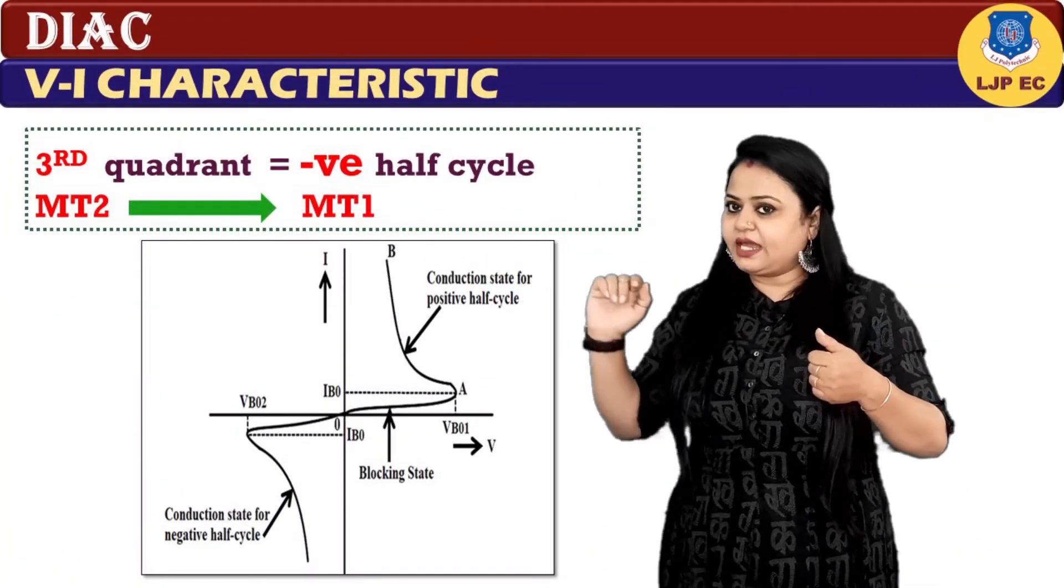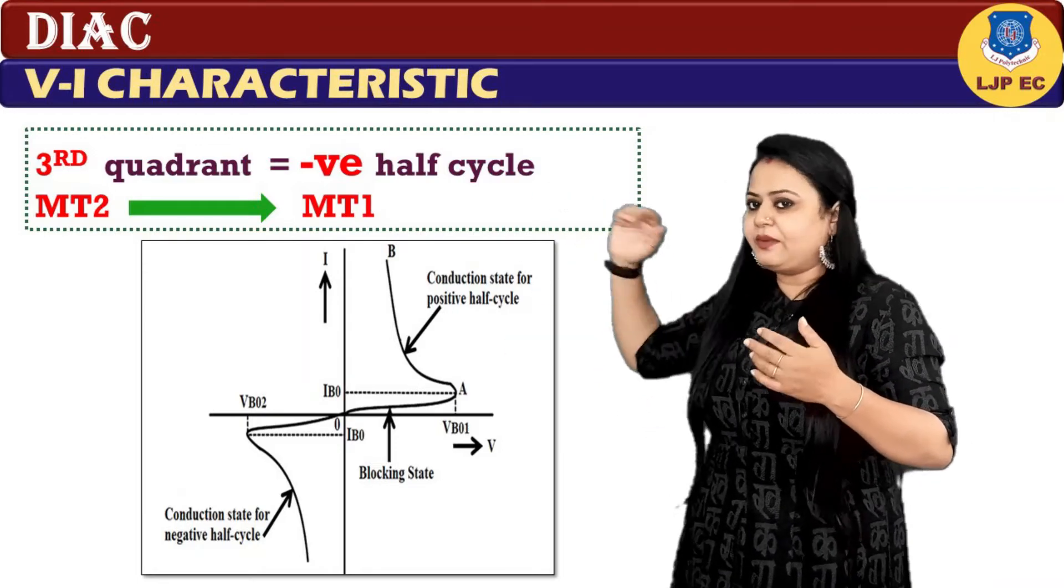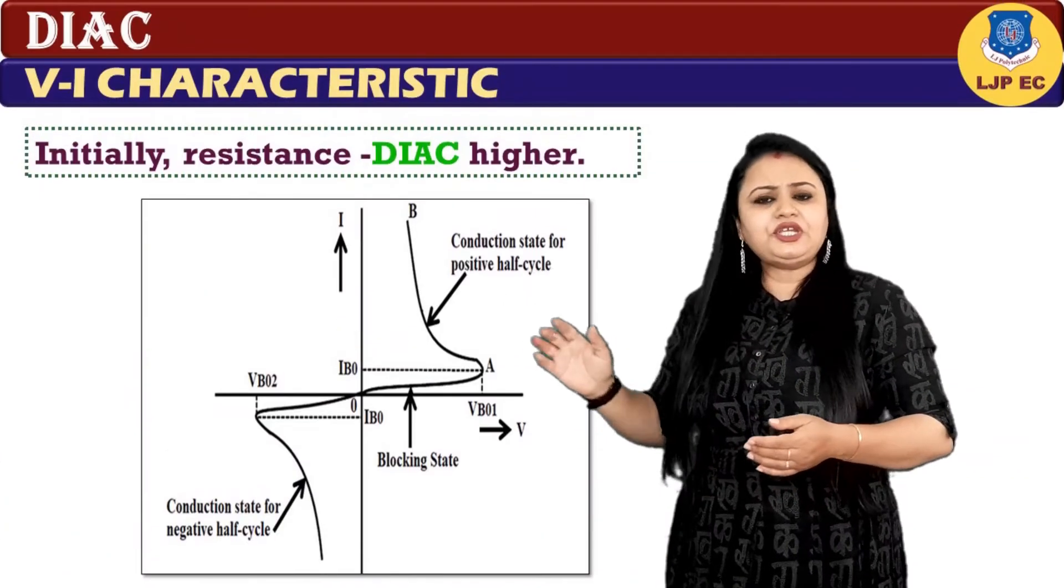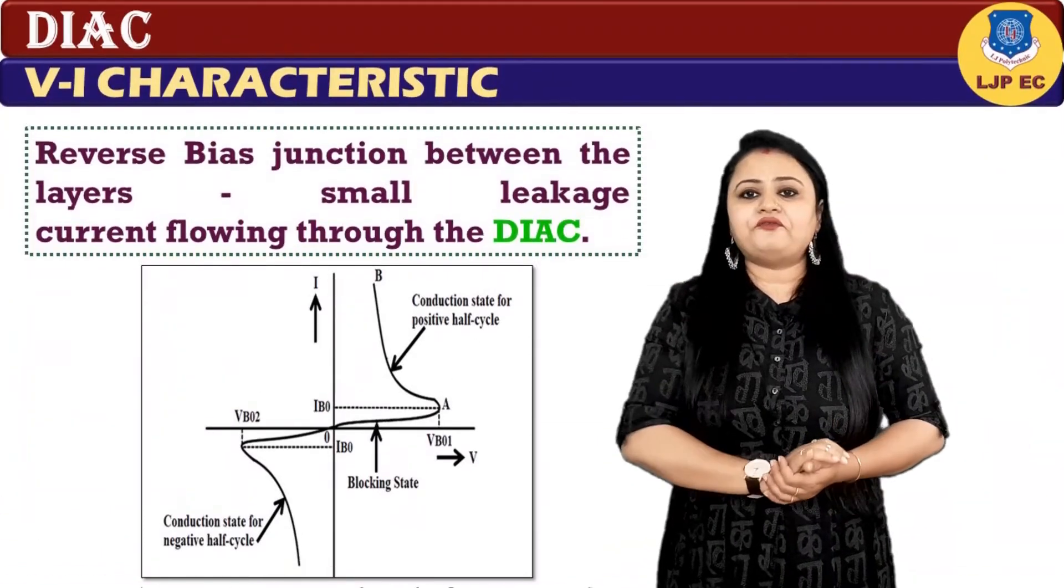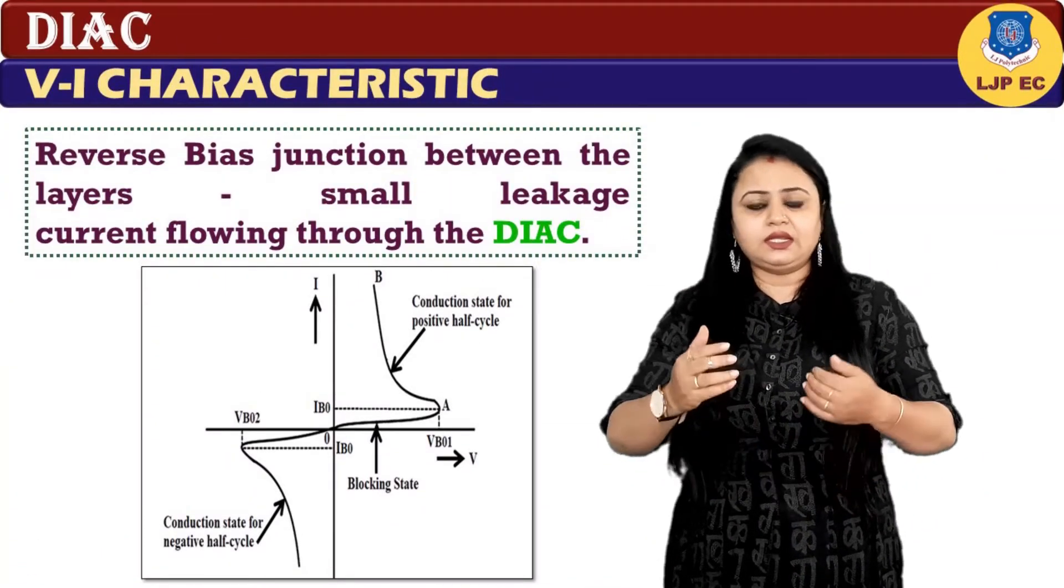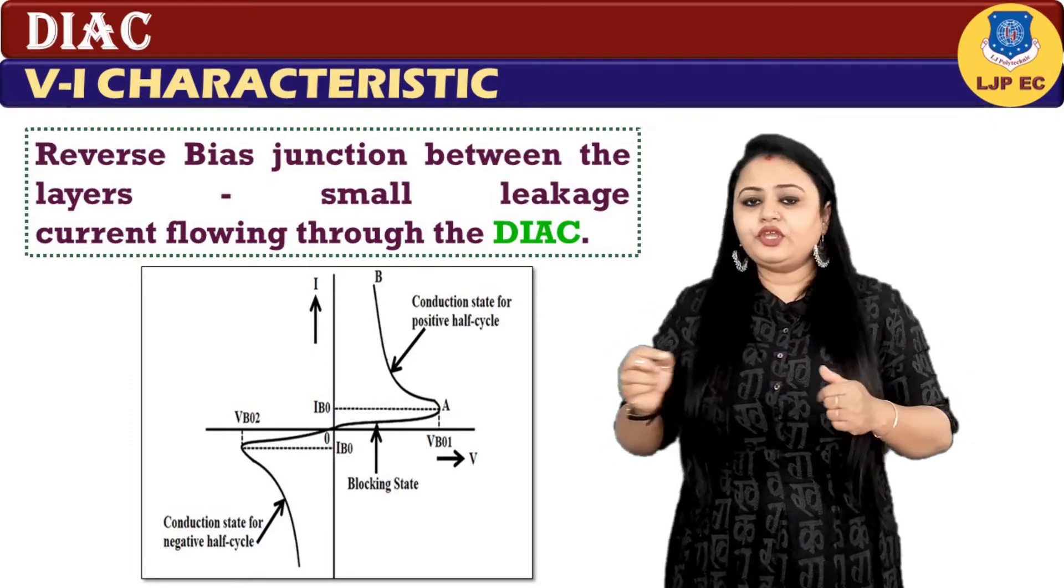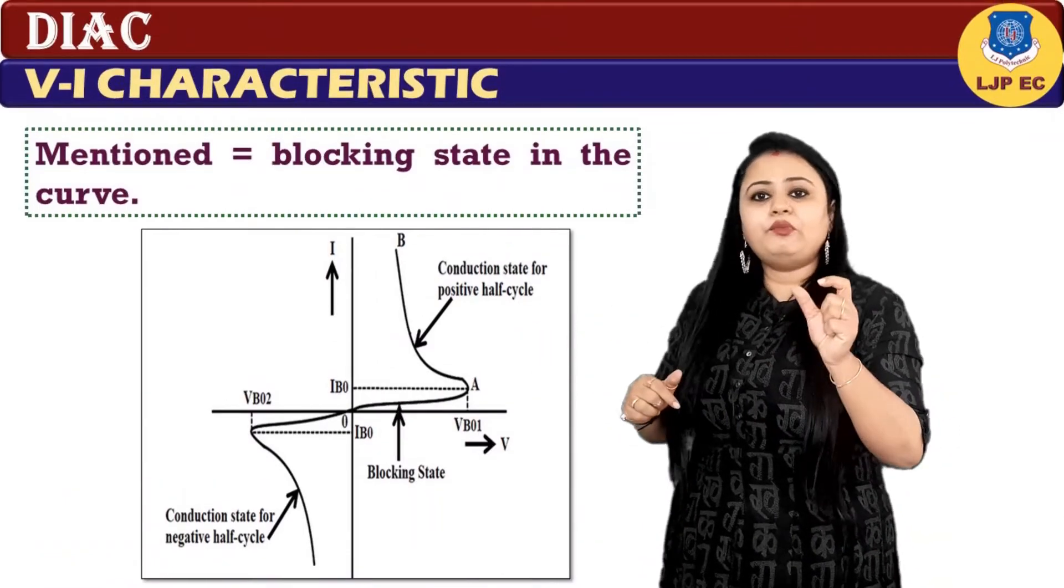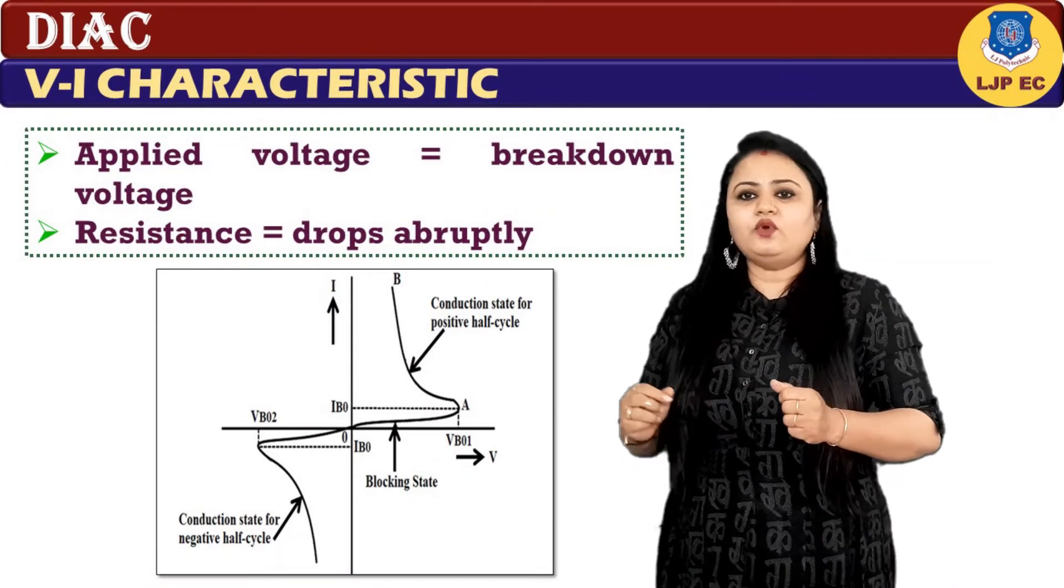Initially, the resistance of DIAC will be higher because of the reverse biased junction between the layers, so there will be small leakage current flowing through the DIAC. It is mentioned as blocking state in the curve.